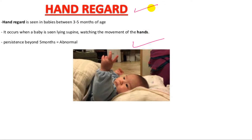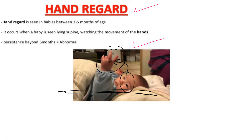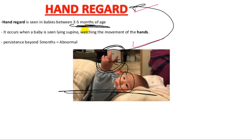So what is hand regard? Hand regard means if a baby is lying in a supine position and watching the movement of his or her hand, then it is called hand regard. It appears between 3 to 5 months of age, but if it still appears after 5 months or persists beyond 5 months, then it is abnormal.